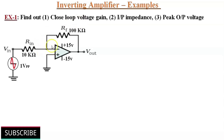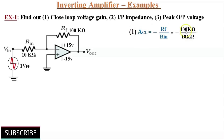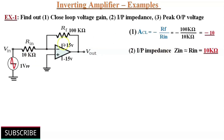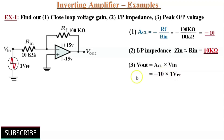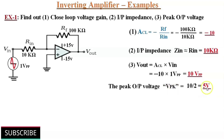Let's solve some problems on inverting amplifier. For the circuit shown in the figure, find out the closed loop voltage gain ACL, input impedance of the circuit, and the peak output voltage. The formula for closed loop voltage gain ACL is equal to minus RF by Rin. Here RF is equal to 100 kilo ohms divided by Rin equals 10 kilo ohms, that gives ACL equals minus 10. The input impedance Zin of the circuit is equal to Rin, that is equal to 10 kilo ohms. The peak output voltage Vout is equal to ACL multiplied by Vin. Here ACL is minus 10 into input voltage 1 V peak to peak, that gives 10 V peak to peak output voltage. Therefore, the peak output voltage VPK is equal to 10 divided by 2, that gives 5 V peak output voltage.